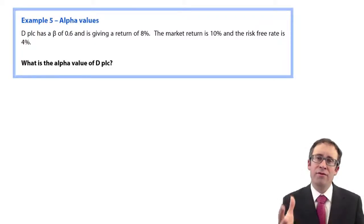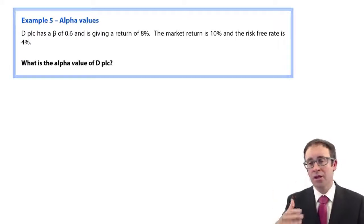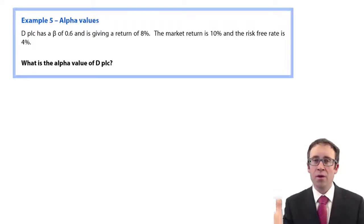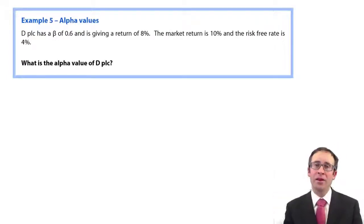And because of that, there are then differences to the theoretical return that we would expect to get. So if we compare theory with the actual, that's where we can bring in alpha values.